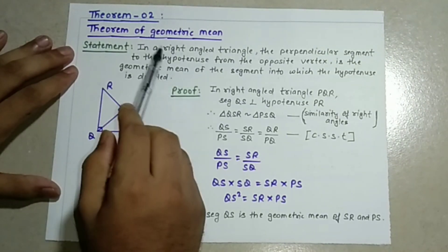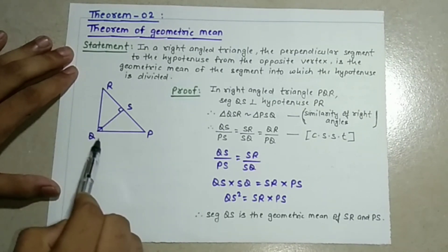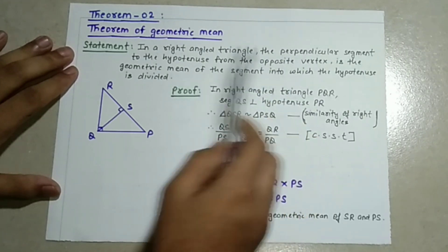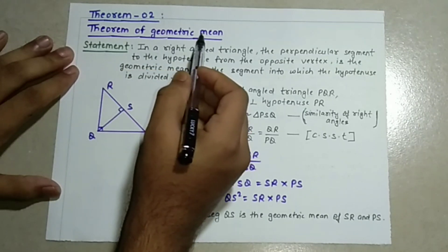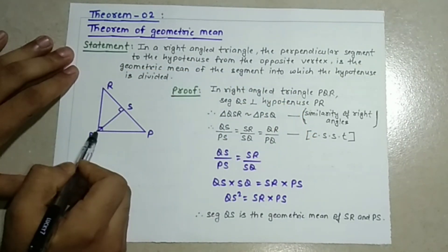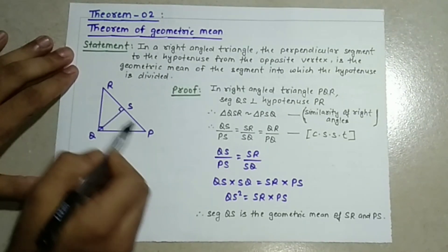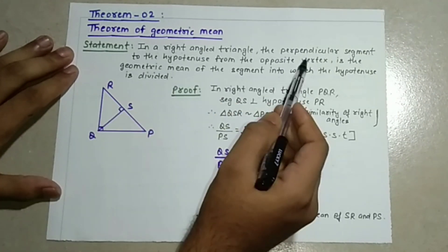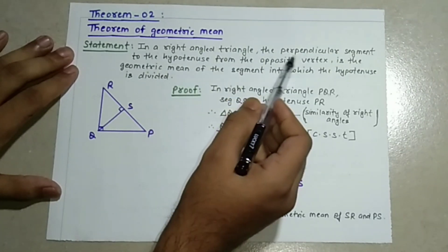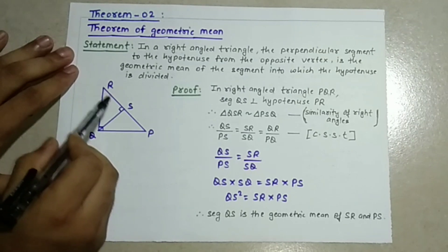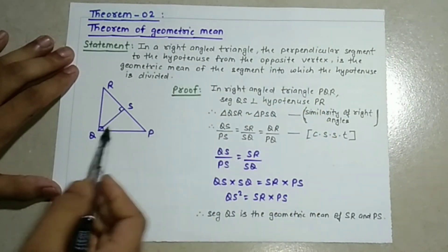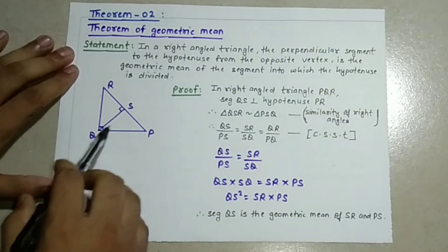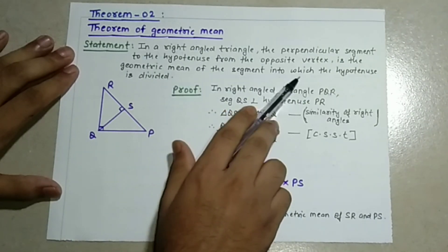We have a statement. The right angle triangle drawn is RQP. The perpendicular segment drawn to the hypotenuse from the opposite vertex is the geometric mean. This perpendicular segment from the opposite vertex is the geometric mean.